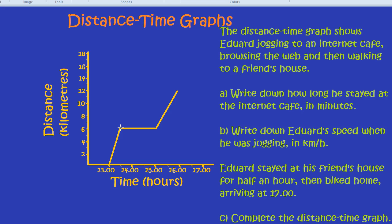So, the question actually is, how long did he stay at the internet cafe? Well, if this flat line represents him staying at the internet cafe, we just need to work out how much time has gone by. So, it started at 1:30 and ended at three o'clock. So, 1:30 to 2:30, that's an hour, and then another half an hour. So, he stayed for an hour and a half at the internet cafe.